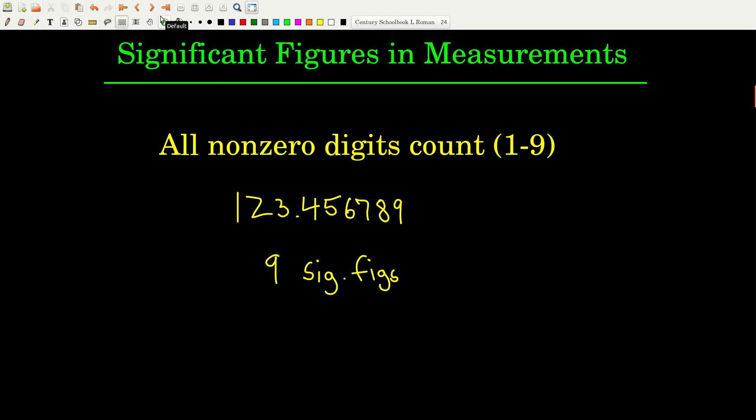When we take a measurement and write that number down, one of the things we care about is how many significant figures there are in that number. Any number from a measurement will have a certain number of significant figures. The first rule is: if it's not a zero, it counts. So in this number, none of the digits are zero, so they all count — there are nine significant figures.